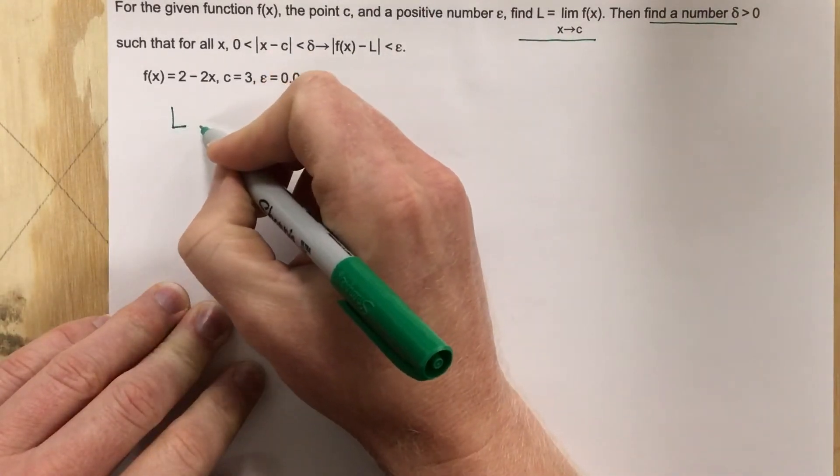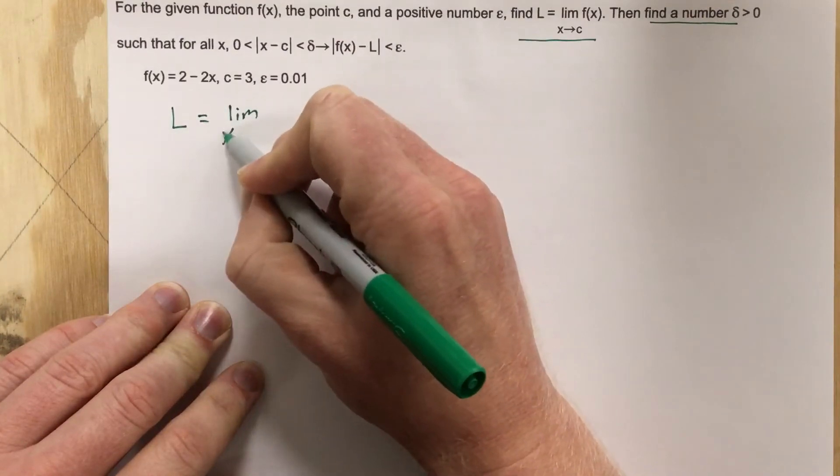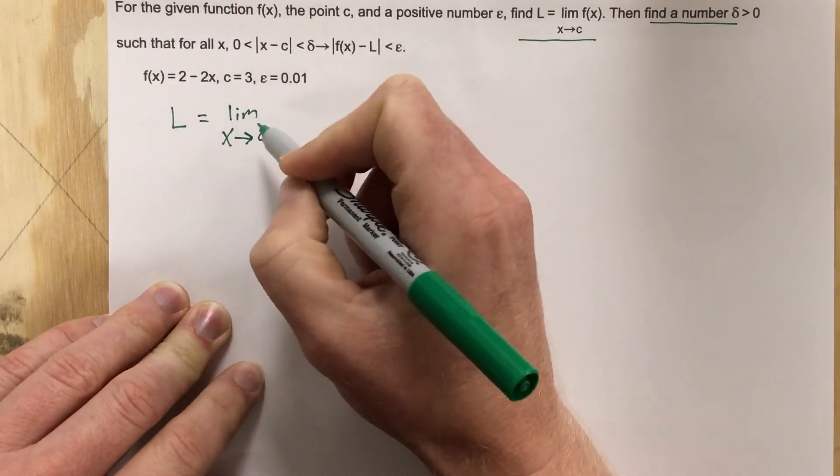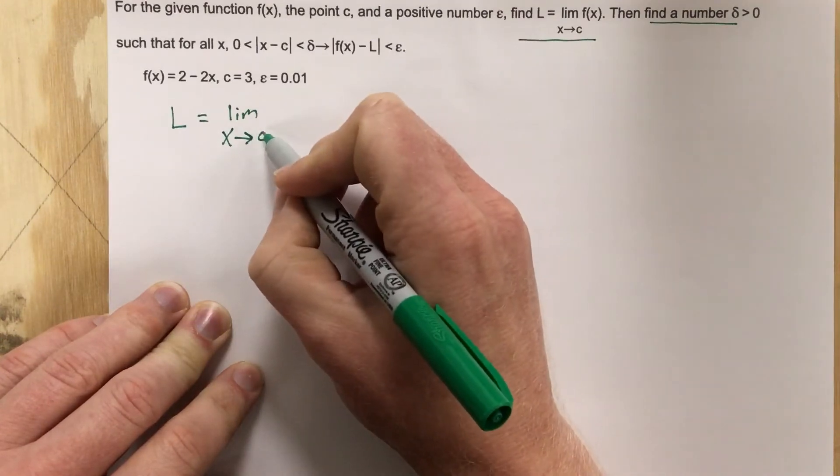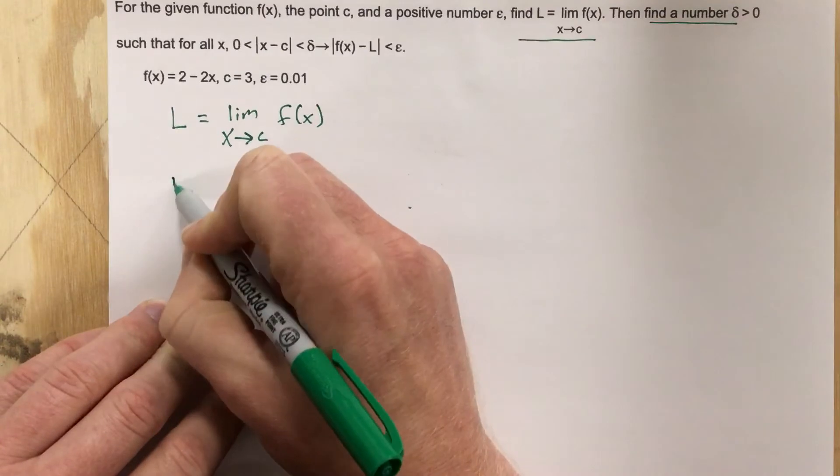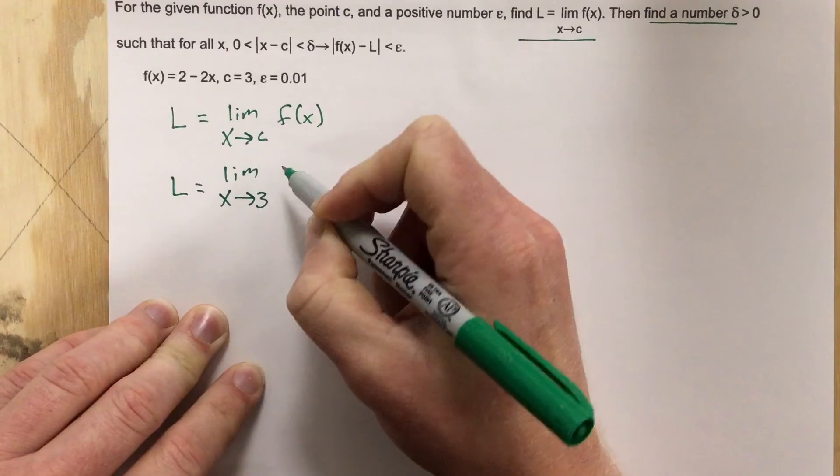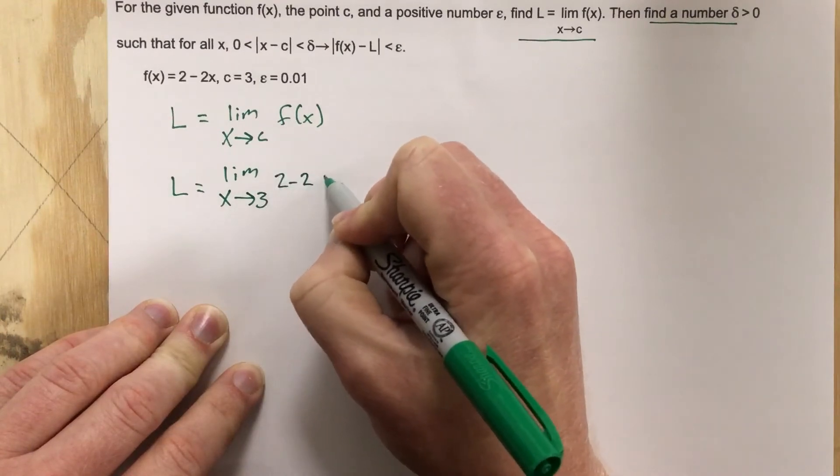So we want the limit as x approaches c for our function. Well, they said x approaches c, so we'll just write it out this way, and then we'll say, all right,